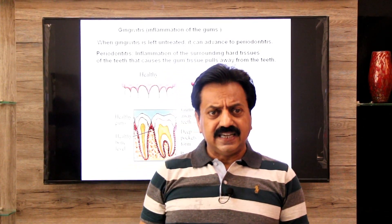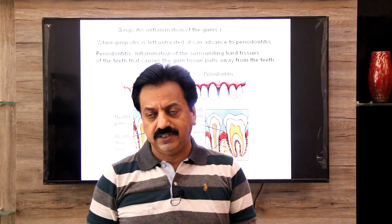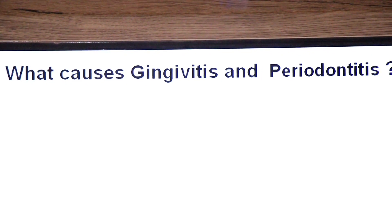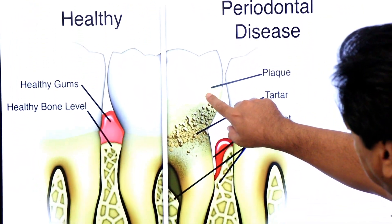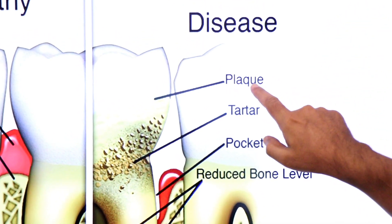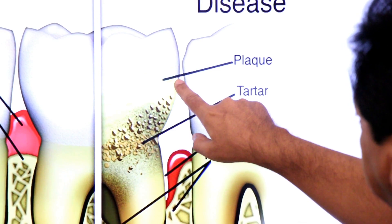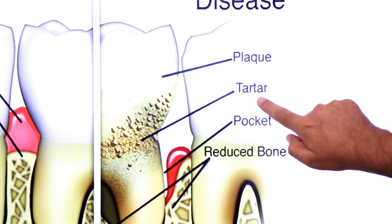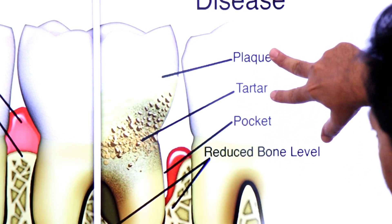There are two causes: first is plaque formation and the second is tartar formation. Bacteria mix with food particles to form a sticky film known as dental plaque. If plaque is not removed, the bacteria deposit minerals within the plaque, turning it into a concrete-like substance called tartar, also known as calculus, which cannot be removed by brushing.